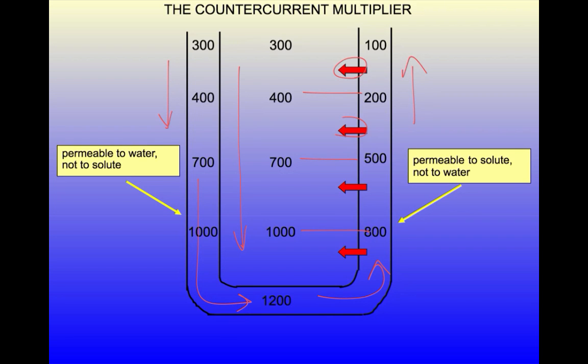Once the fluid reaches the distal convoluted tubule, it is quite hypotonic to plasma, 50 to 100 milliosmolar, and what happens after that depends entirely on the presence or absence of ADH, which acts on the collecting tubule.